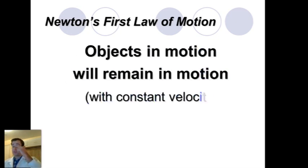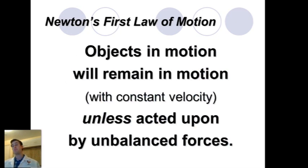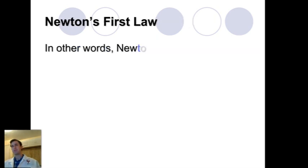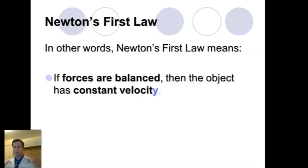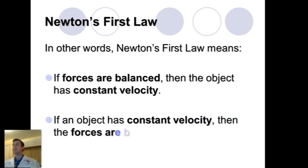Now we learned about Newton's first law. It says that an object in motion will remain in motion with a constant velocity, unless it's acted upon by an unbalanced force. And what does that mean in simple terms, and why do we care? Because it means if forces are balanced, then the object is going to have a constant velocity. And vice versa, if it's moving with a constant velocity, we know that all the forces acting on it are going to be balanced.